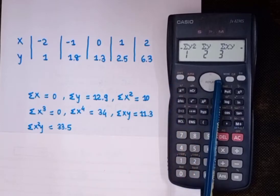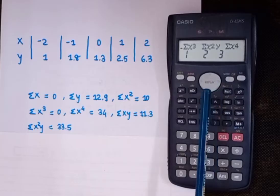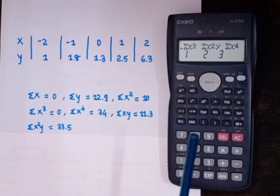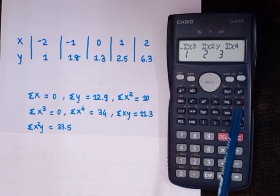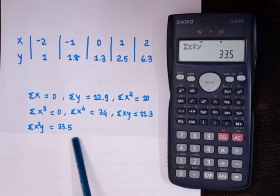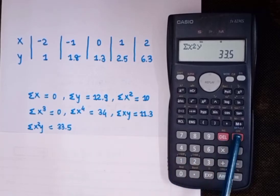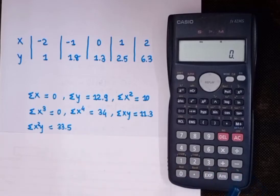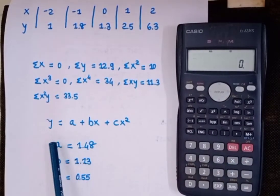Then press Shift 1, press next three times. You can see Sigma X³, Sigma X²Y, and Sigma X⁴ — all these values can be found. I'm finding Sigma X²Y: press 2 then equals — we're getting 33.5. This is how you can find all these values on the calculator.